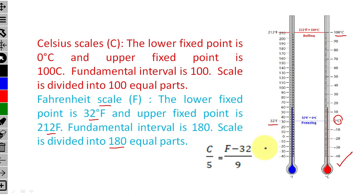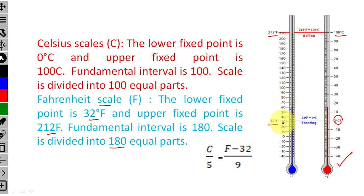On the Fahrenheit thermometer, the lower fixed point is 32 degrees and the higher fixed point is 212 degrees, giving a fundamental interval of 180.